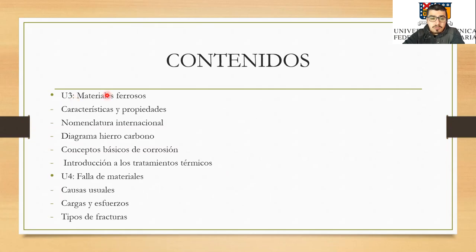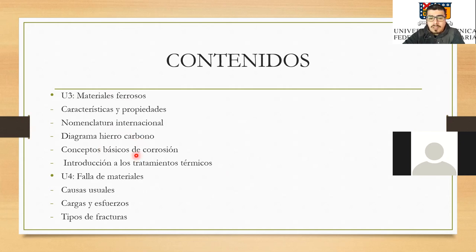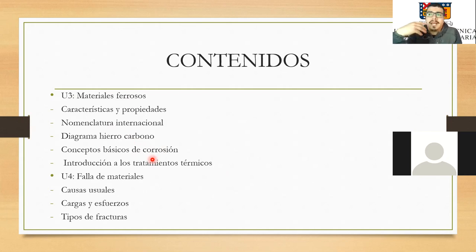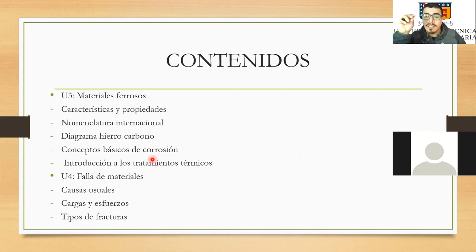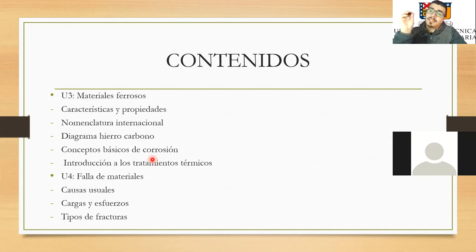Tenemos los materiales ferrosos con su nomenclatura, características y los diagramas hierro-carbono, que se hace bastante complejo. También los conceptos básicos de corrosión, muy importantes al establecer un plan de mantenimiento. En alguna etapa de su carrera va a desarrollar actividades de mantenimiento como la inspección de algún elemento. Por ejemplo, va a inspeccionar algún rastro de corrosión, y si encuentra puntitos de color rojizo terracota, puede hacer un ensayo de dureza y darse cuenta de que ese material está muy blando, lo que indica que la corrosión ya avanzó al interior.